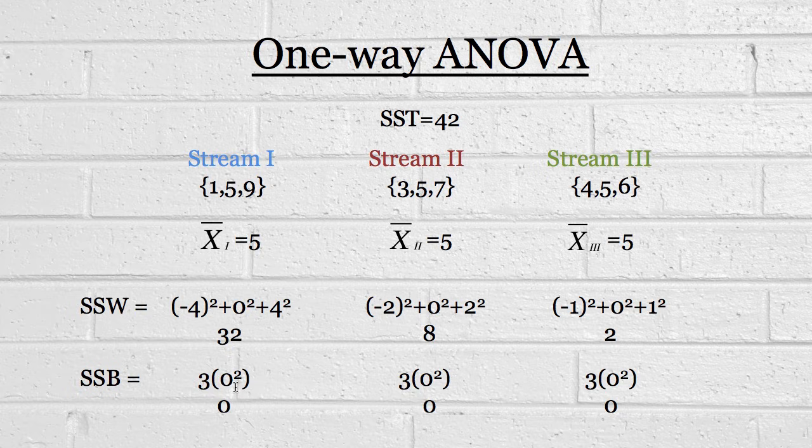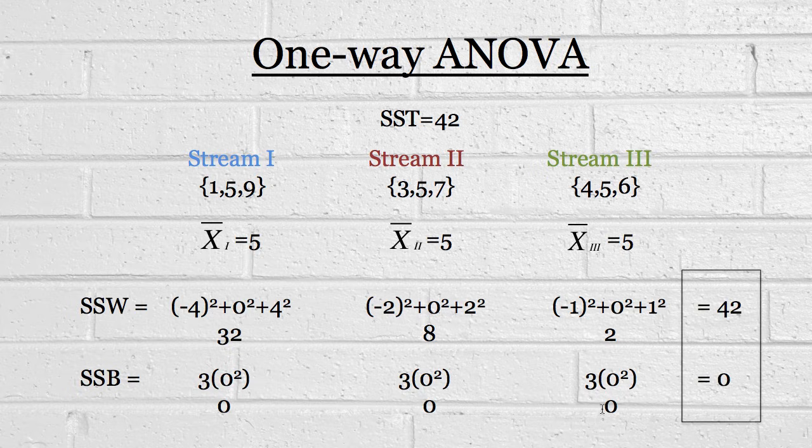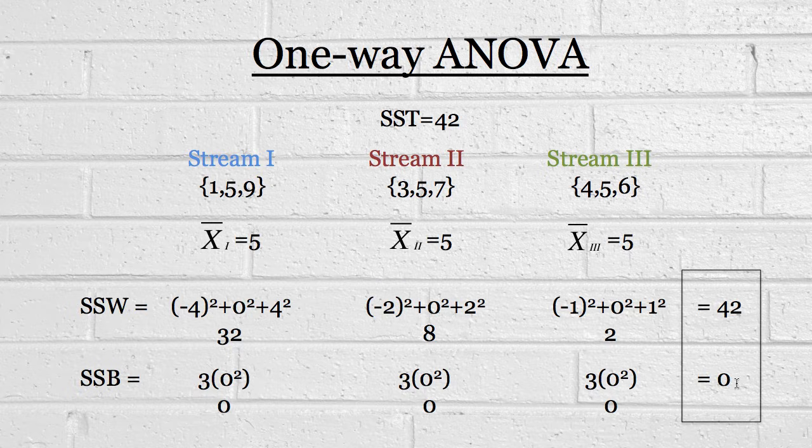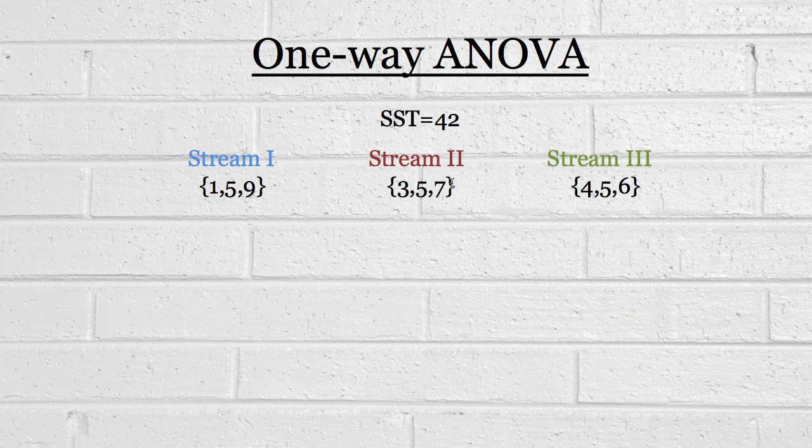In this example, though, there is no between-group variation. Each of these group means is equal to the global mean. So, we get zero, zero, zero. And in total, then, we have a sum of squares within group of 42 and a sum of squares between groups of zero. So, all of the variation between these nine students is occurring within streams.